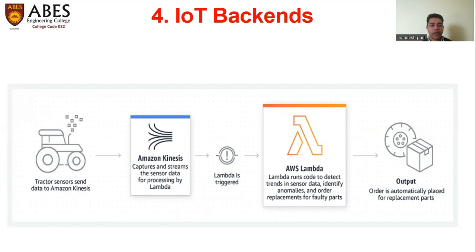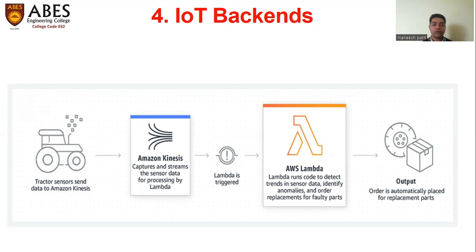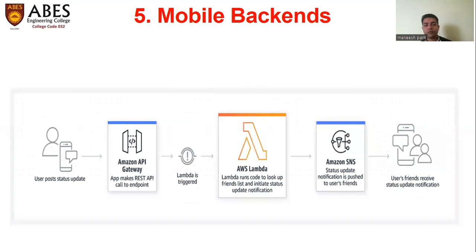The fourth use case is IoT backends. For example, there are tractors running in farmer fields and the tractor sensors send data to Amazon Kinesis. Amazon Kinesis captures and streams the sensor data for processing by Lambda. Lambda is triggered and runs all the code to give us the output - for instance, if any part is broken in the tractor, Lambda can provide real-time data through Kinesis into the Lambda function, giving output for any replacement of tractor parts needed.